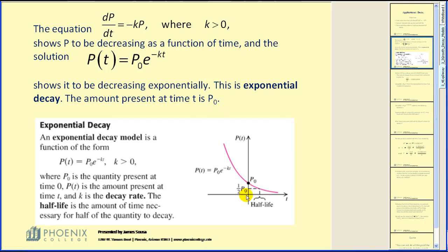Here's a graph of exponential decay. Notice that as we progress from left to right, the graph goes down exponentially. An exponential decay model is a function of the form p of t equal to p-naught times e to the power of negative kt. P-naught is the quantity present at time zero, p of t is the amount present at time t, and k is the decay rate. The half-life is the amount of time necessary for half the quantity to decay.